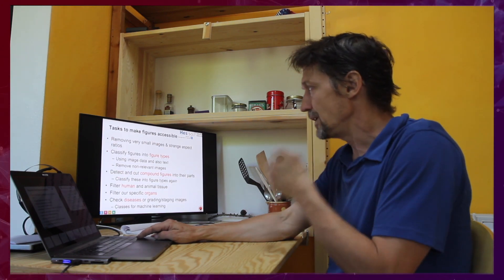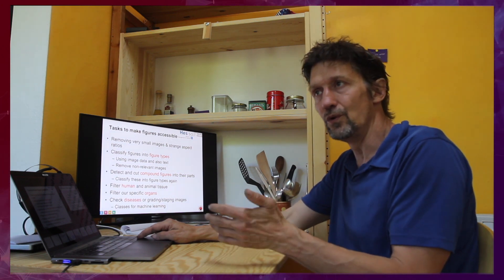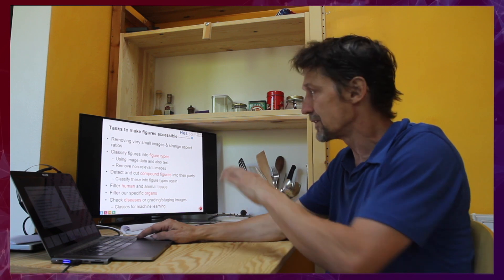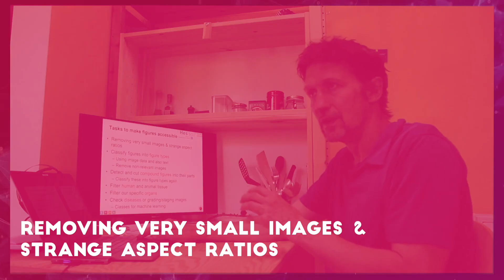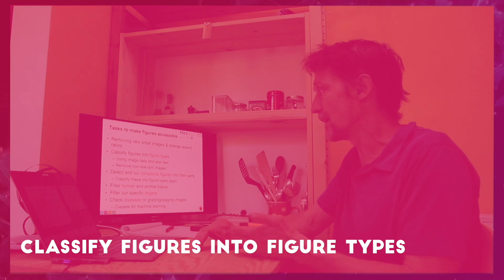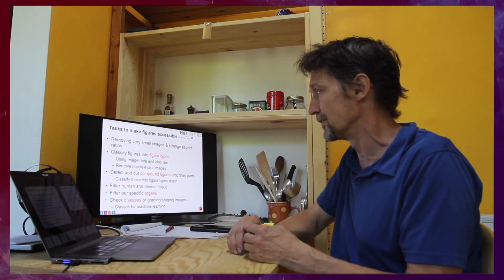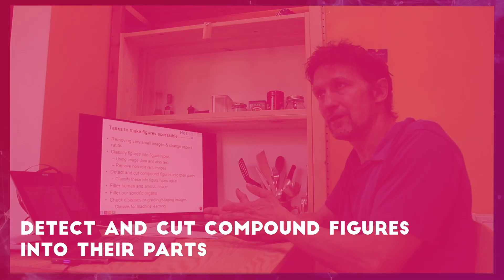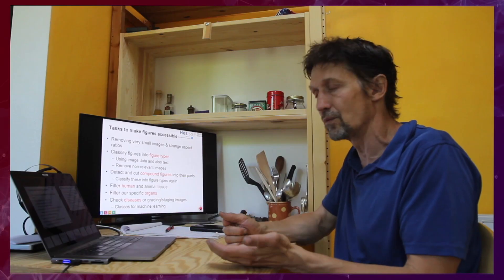To then make these data available that we would like to, we actually need to have several steps. So first, we do an analysis of the images that are available. There are about 20 something million, but some of them are small or just like buttons or they have a strange aspect ratio. So these are removed. Then we end up with about 14 million. We do a classification of the figure types. For that we use image data, so the pixels of the image. We use text. Then we use everything that has seemed non-relevant for us. At the same time, we detect compound figures and then cut them apart. So again, we can remove what we're not interested in and concentrate on what we're really interested in, in our case histopathology.